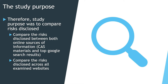Based on these problems, the study purpose was to compare the risks disclosed between both online sources of information — the CAS and Google search results — and across all examined websites together. In addition, we looked into how well the Google search results contextualized risks based upon factors such as pre-anesthetic health status, planned surgery type, and the anticipated anesthetic treatment associated with the medical procedure.